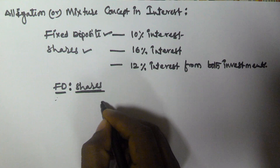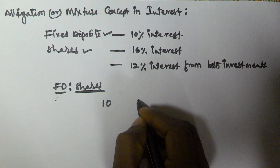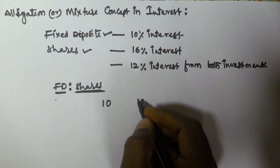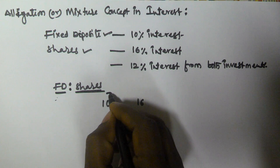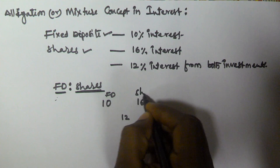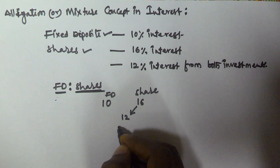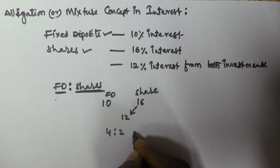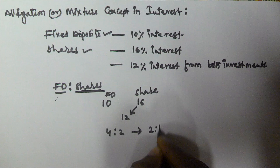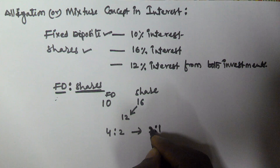From fixed deposit he is getting 10%, from shares he is getting 16%, and from both investments he is getting 12%. Using the allegation concept: 16 minus 12 equals 4, and 12 minus 10 equals 2. So the ratio is 4 to 2, which is 2 to 1.